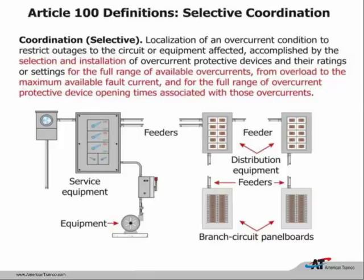In definitions, the technical committee has been working on selective coordination for about three code cycles. Selective coordination means the overcurrent device closest to the fault is the one that operates first. In red, they have introduced new wording: it's going to be for the full range of available overcurrents, from overload to the maximum available fault current. That's going to present a challenge, because it was difficult enough to coordinate those overcurrent devices when talking about just fault current—now we're talking about overloads also.